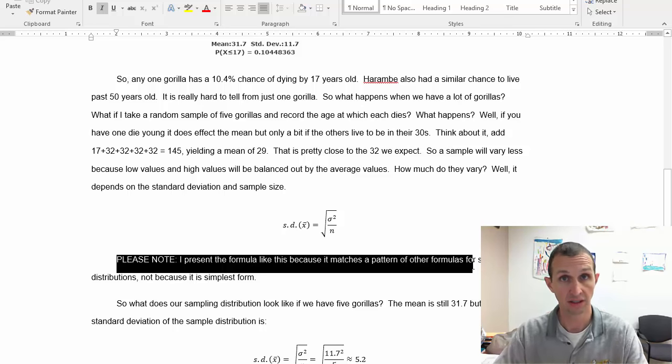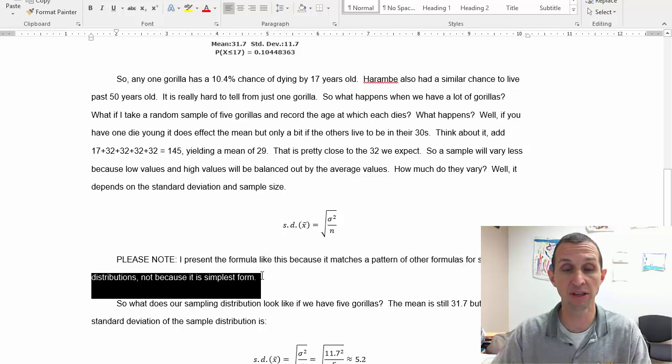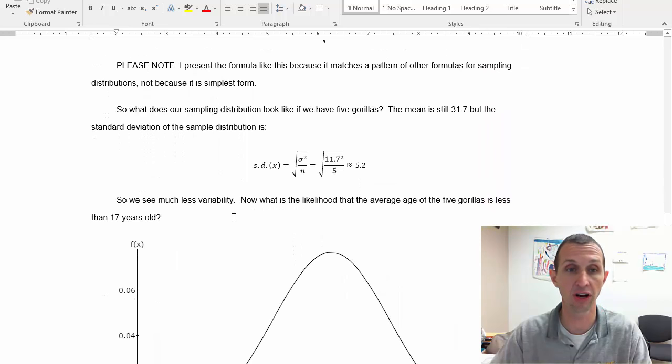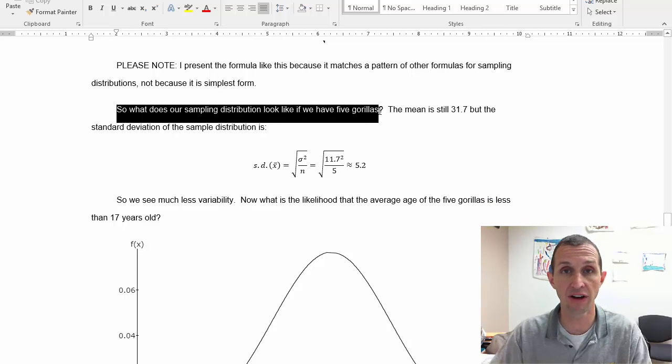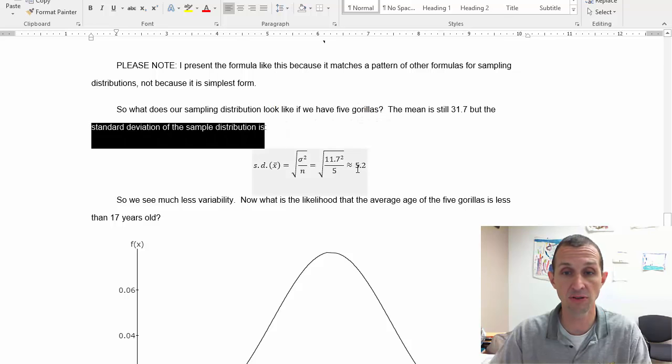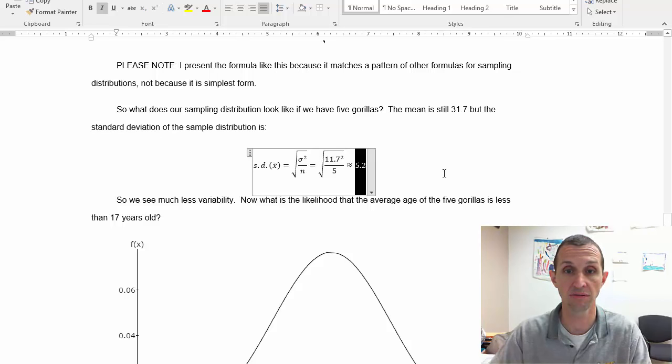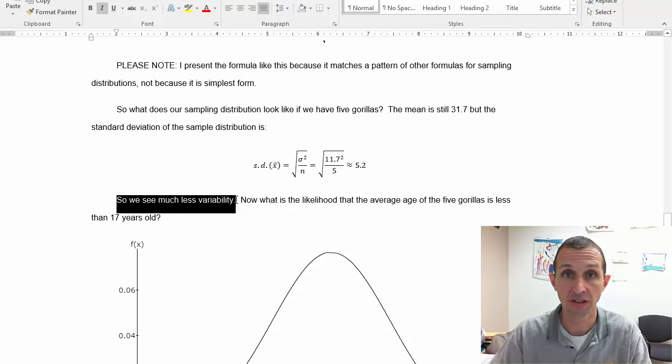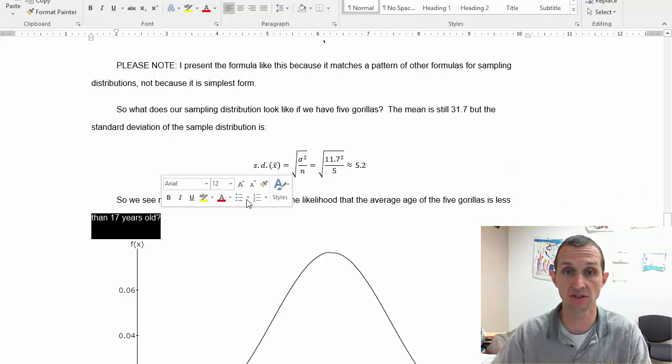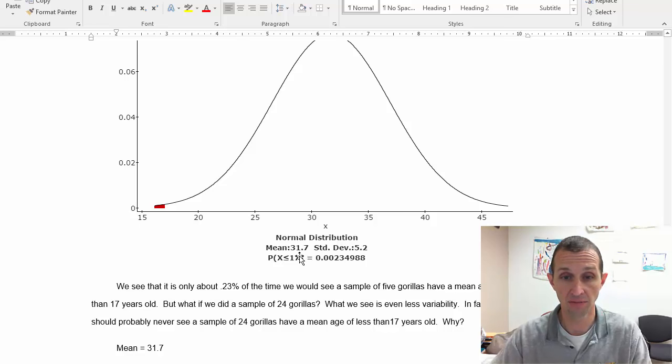So now please know I present the formula like this because it matches a pattern of other formulas, okay, and the study of patterns is really what mathematics is about for sampling distributions, not because it is the simplest form. You will not see this printed in a book but I think it should be. I'm gonna make a pedagogical argument for this not a mathematical argument. So what does our sampling distribution look like if we have five gorillas? Well the mean is still 31.7 but the standard deviation of the sampling distribution ends up being 5.2 when you do the calculation by plugging in the standard deviation and the sample size. So we see about half the variability. Now what is the likelihood that the average age of the five gorillas is actually less than 17 years old?